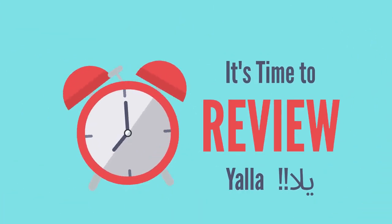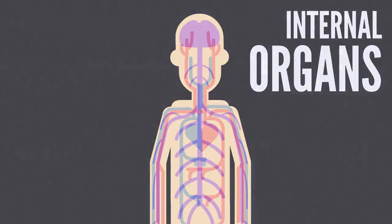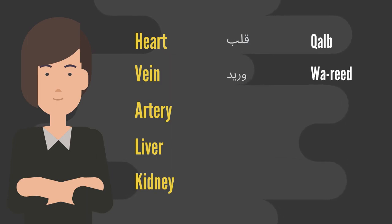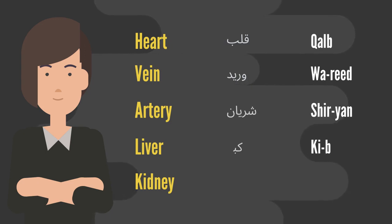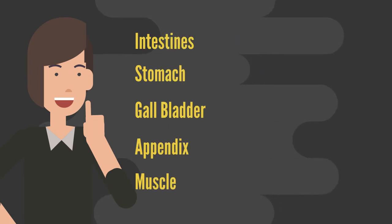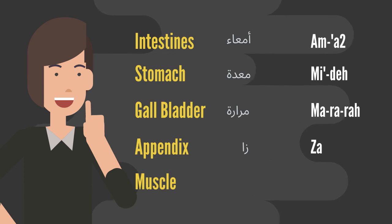It's time to review — yalla! Heart. Vein: woreed. Artery: shiryan. Liver: kibit. Kidney: kilia. Intestines: amma. Stomach: maude. Gallbladder: marara. Appendix: zayde.